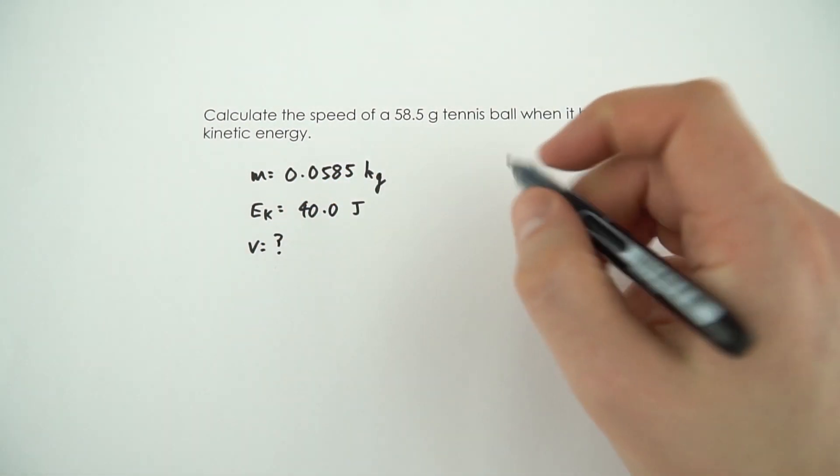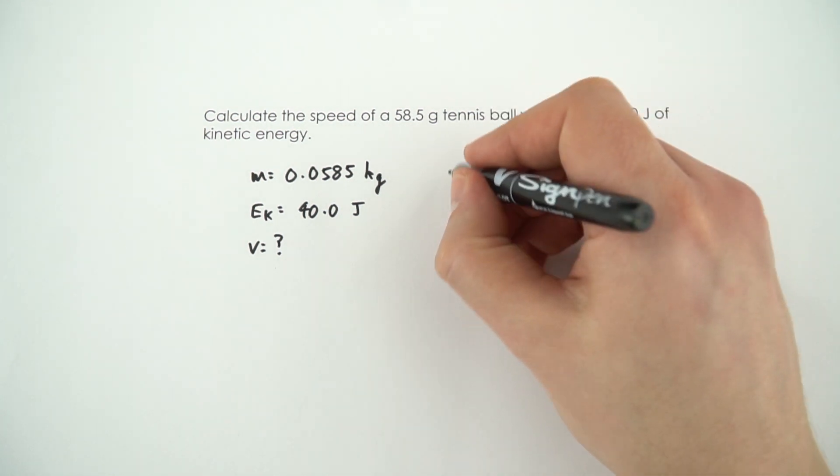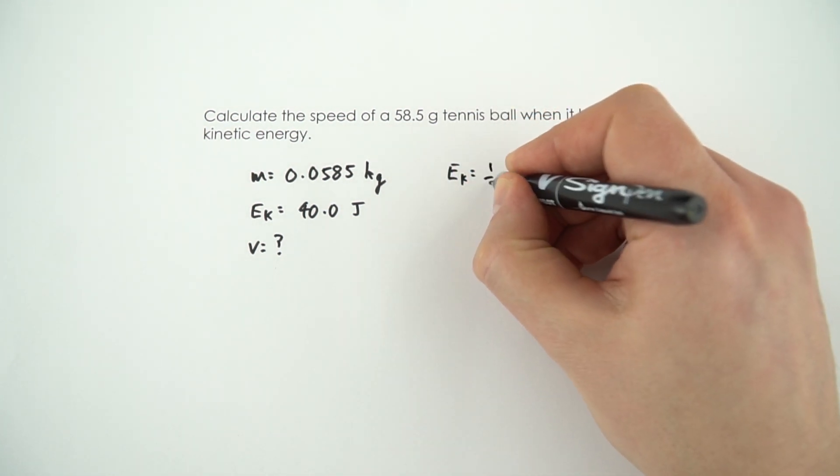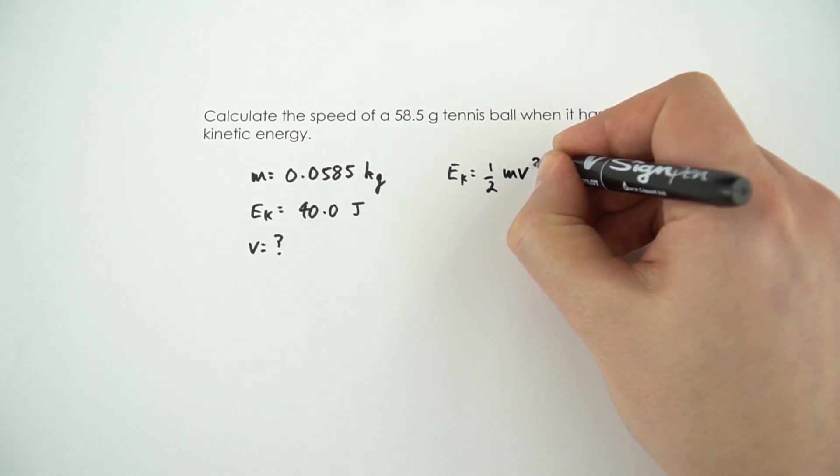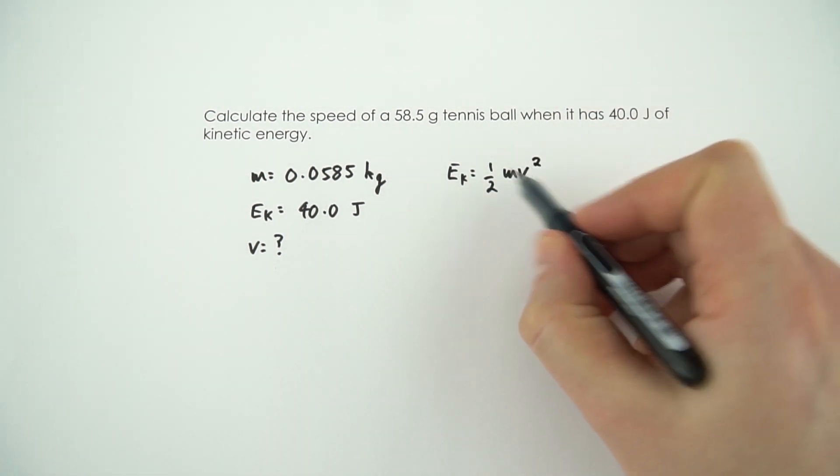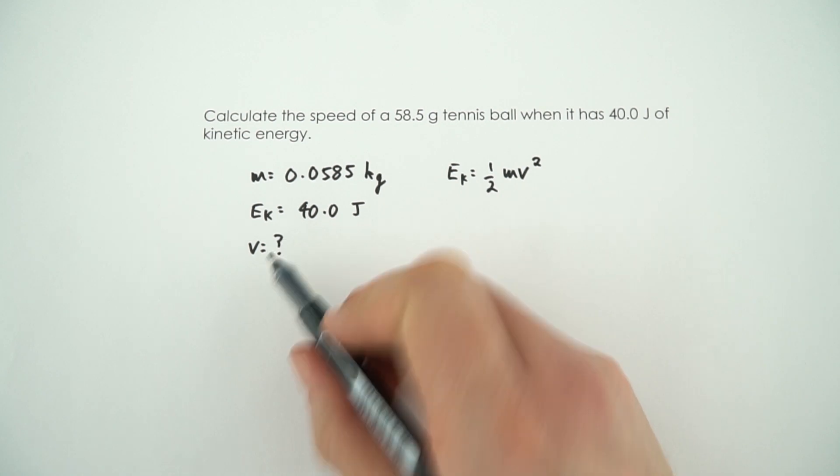So what I'm going to do is first of all write out the equation that we do know, that the kinetic energy is equal to a half mv squared. And what I then need to do is rearrange this to make v the subject, because that's our unknown quantity.